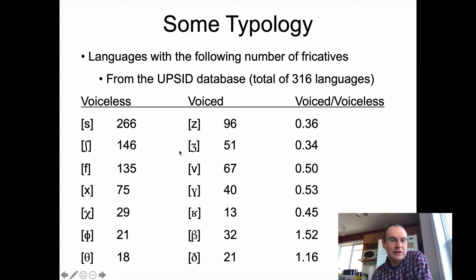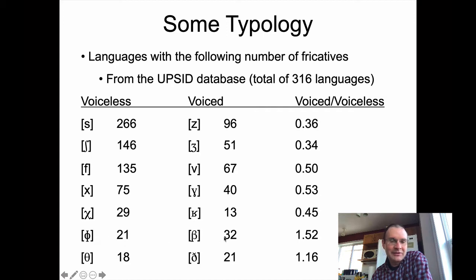It's about the same ratio for the post-alveolars, the next most common place of articulation for fricatives. From there we move on to labial-dentals, to the velars, to the uvulars, and all of these show the same pattern — there are more voiceless fricatives than voiced fricatives. It's only when we get to very front-of-the-mouth fricatives, like the bilabial fricatives, that there are more voiced ones. And likewise, there are slightly more languages that have the voiced interdental fricative than the voiceless interdental fricative.